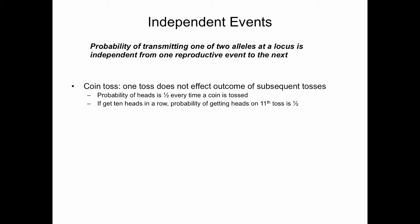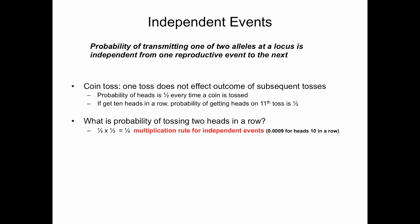The probability of getting heads is one-half every time the coin is tossed. If you toss a coin and get ten heads in a row, the probability of getting heads on the eleventh toss is still one-half — assuming it's not a weighted coin. The probability of tossing two heads in a row highlights the multiplication rule for independent events: it's one-half times one-half, or one-fourth. The probability of getting ten heads in a row is very small: 0.0009.